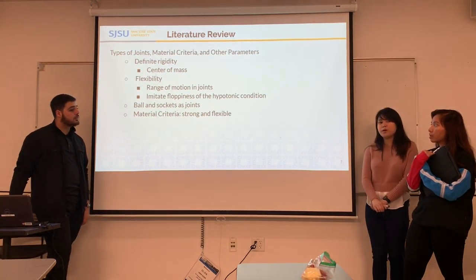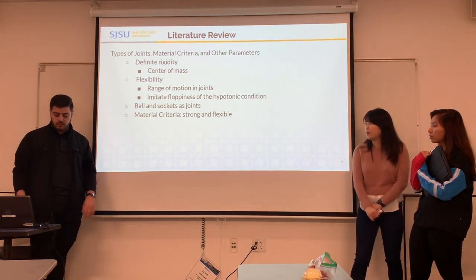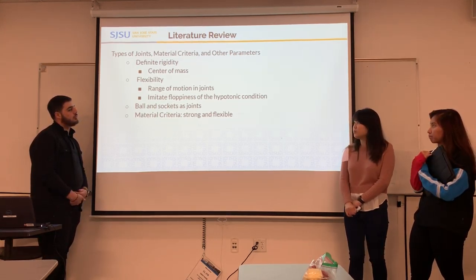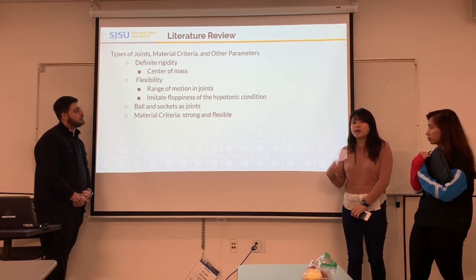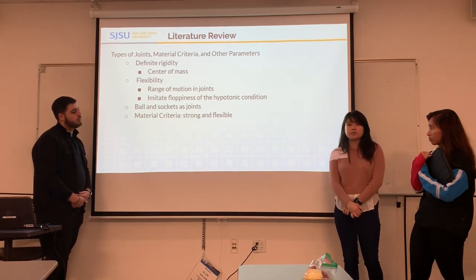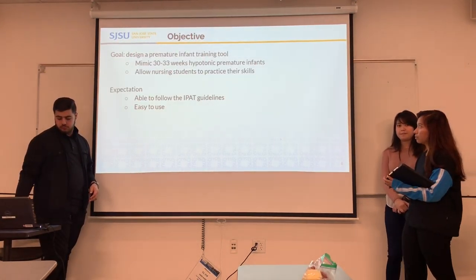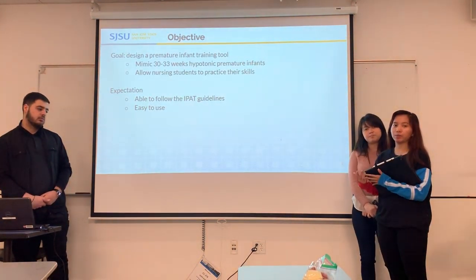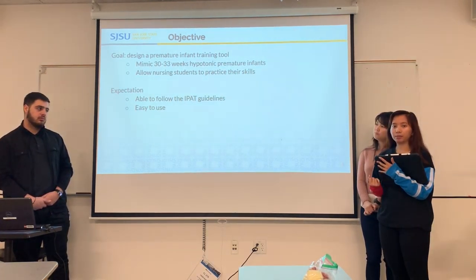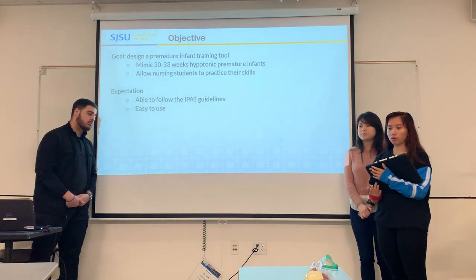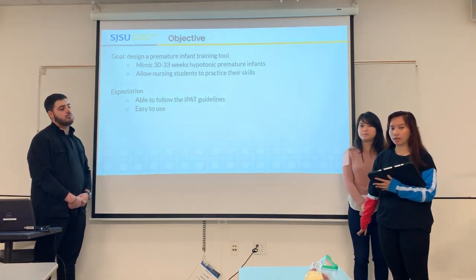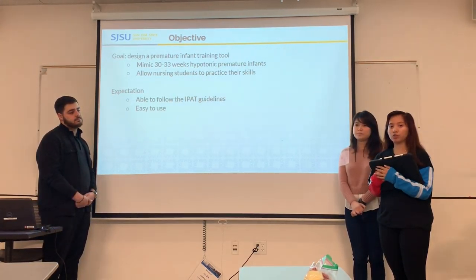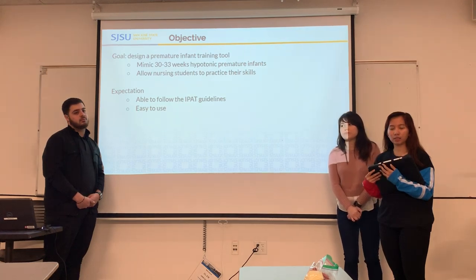From our literature review, we found the criteria for the device, which has to be strong and flexible for nurses to use, and also considers the range of freedom for each joint. We are using ball-and-socket joints for our prototype. We have a very basic goal: the device should be able to mimic a hypotonic premature infant that is 30 to 33 weeks old, and this will serve as a training tool for nurses and physicians to practice positioning babies correctly.